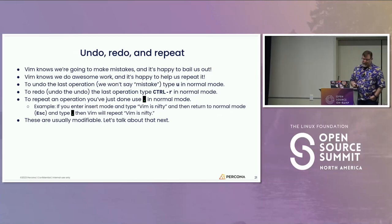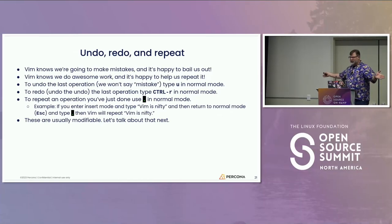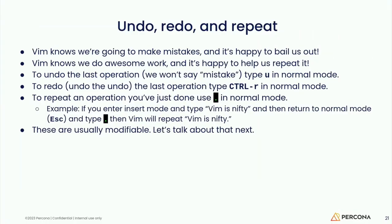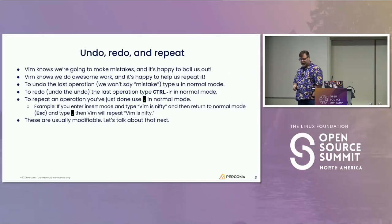Undo, redo, and repeat. We're going to make mistakes — VIM will help bail us out. U will undo the last operation. Control R will redo the last operation. If you want to repeat something, a period in normal mode will repeat the last thing you did. This is useful if you want to do a complicated operation and just hit period to do it again — say, adding .html to a bunch of file names as you go through a file.